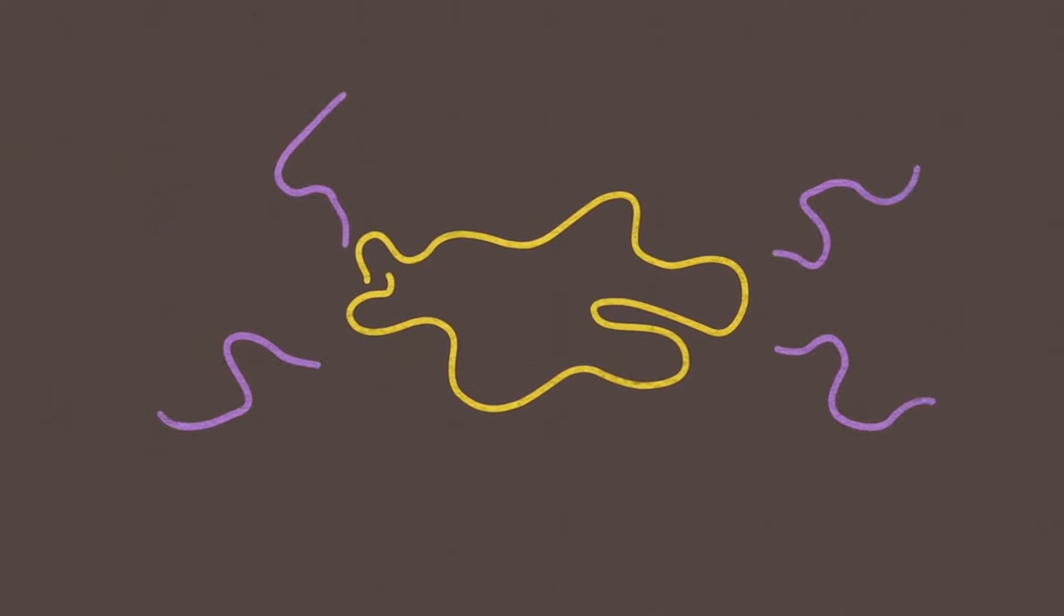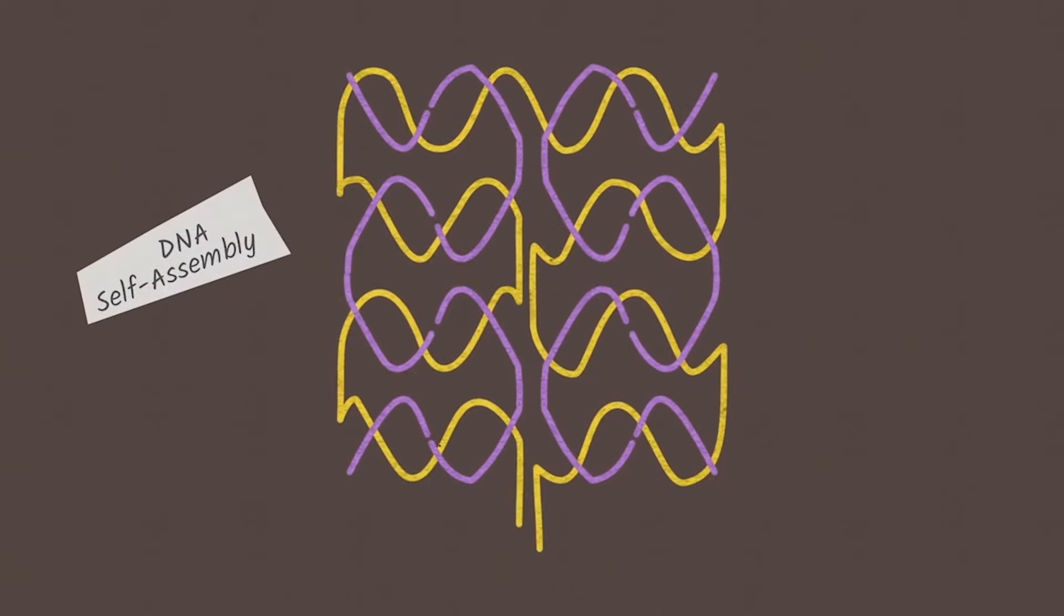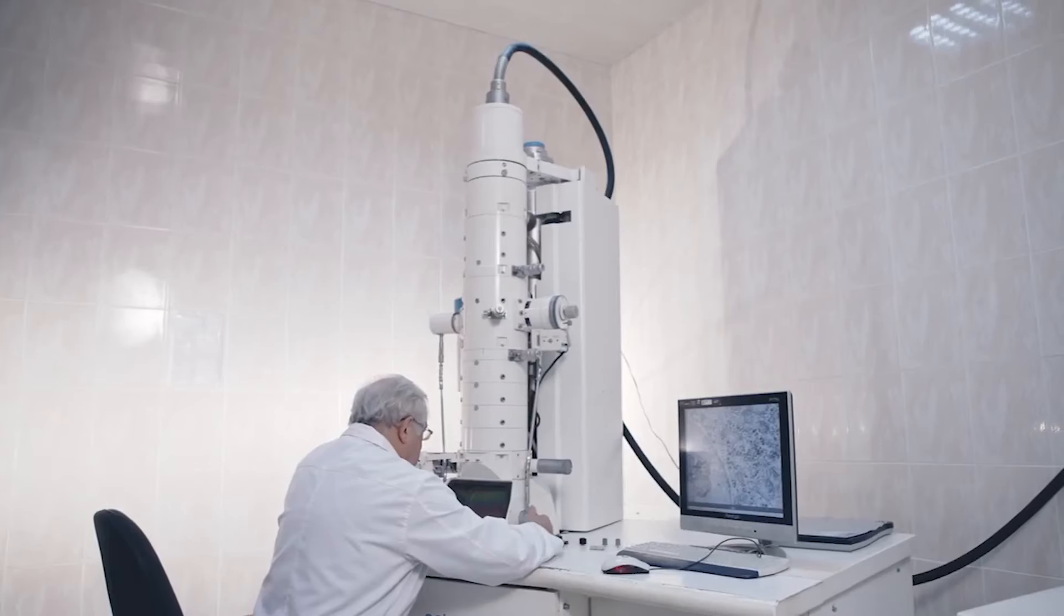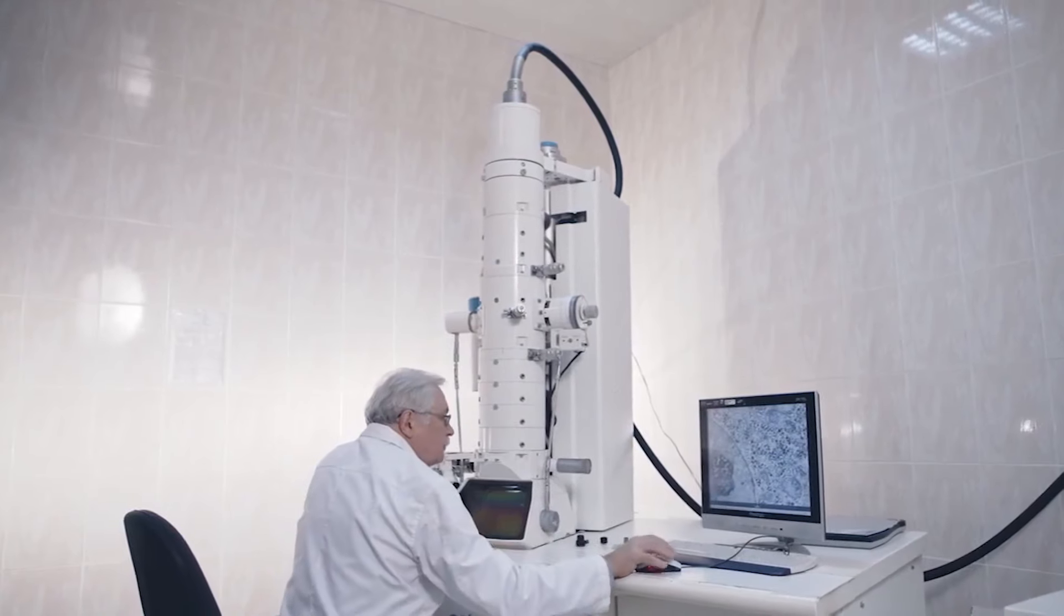He also uses nanoparticles to shape the DNA structures. Xing can use DNA to design nanoscale objects because they have special properties. When objects are that small, you can't easily just pick them up and move them.